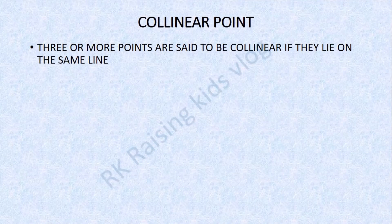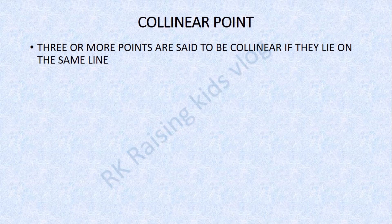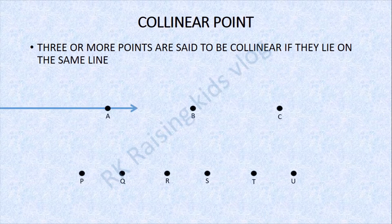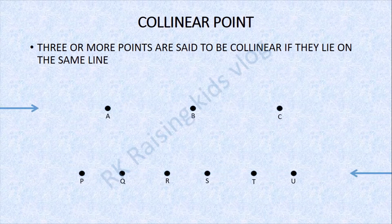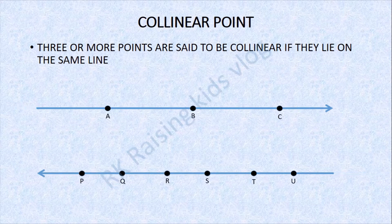Collinear points. Three or more points are said to be collinear if they lie on the same line. For example, the points A, B, C — they are known as collinear points because they lie on the same straight line.